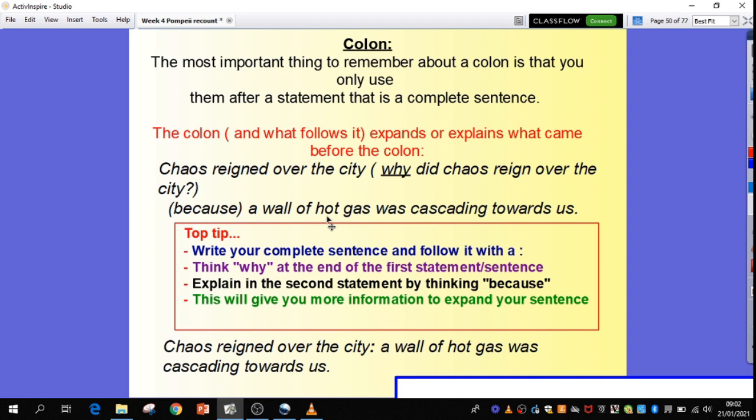So, you've got your complete sentence, follow it with a semicolon, and then expand on the first bit that you've written. So, the way I do it in my head is I've got my sentence, chaos rained over the city, and I think, colon, the colon is because, and then I explain it. So, chaos rained over the city, colon, because, a wall of hot gas was cascading towards us.